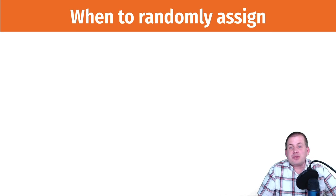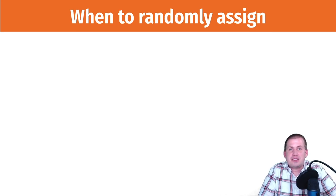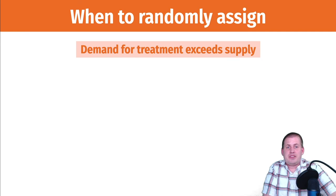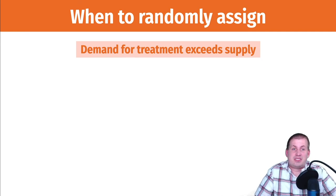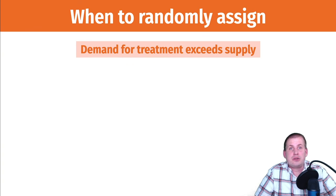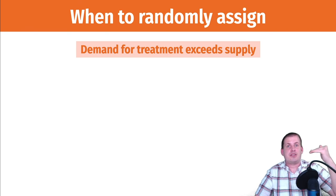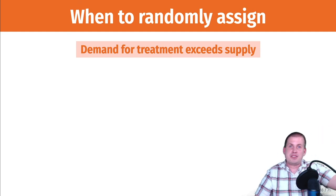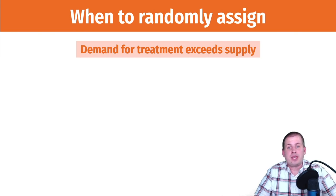Some situations make it okay to run an RCT. If demand for a treatment exceeds supply, it's okay to randomly assign — you don't have enough to give everyone, so a lottery is a fair distribution method. We saw this in Oregon with the expansion of Medicaid: they had money to expand to more people at the poverty line but not enough for everyone, so they randomly assigned people to receive extra Medicaid and studied them.